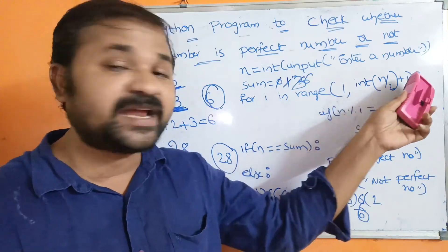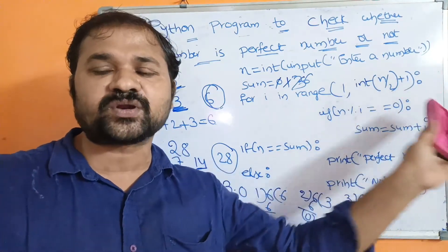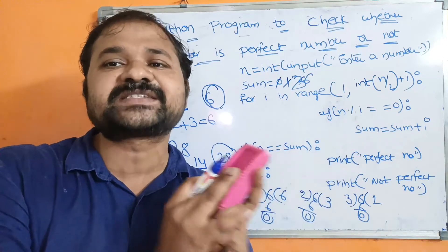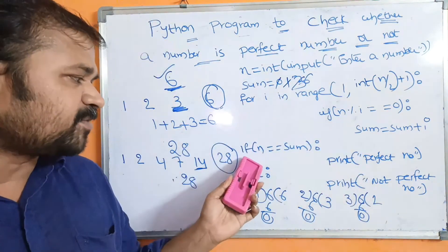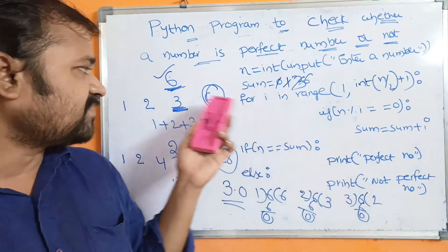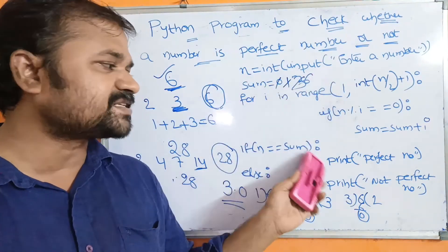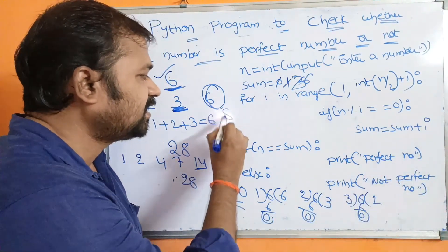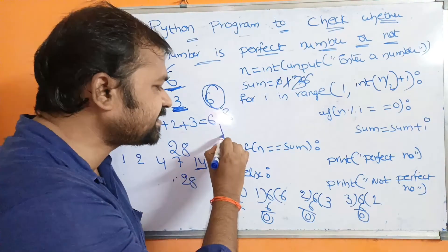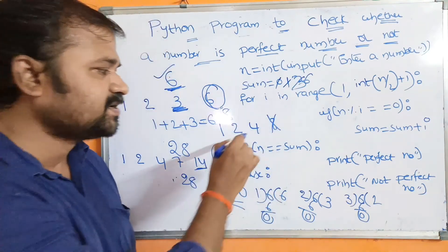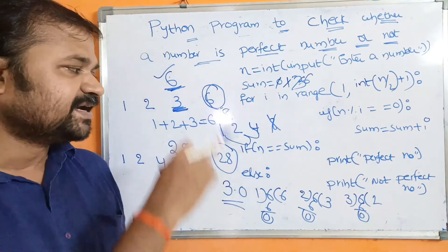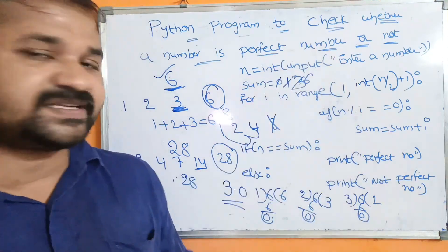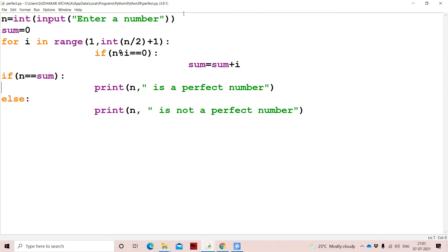The loop stops because the stop value is 4 and the loop runs up to 3. Control comes out of the loop. n=6 and sum=6, both are equal, so the given number is a perfect number. For n=8, the factors are 1, 2, 4; sum = 1+2+4 = 7. Since 7 is not equal to 8, we can say 8 is not a perfect number.